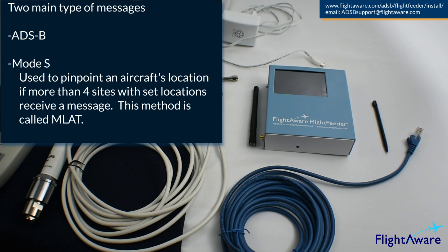ADS-B messages include most of the information needed to track an aircraft, like the location, tail number, direction, and speed.